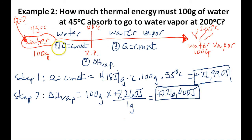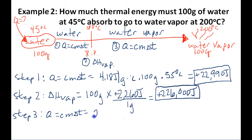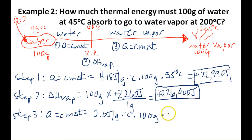In step three, we find how much thermal energy the water vapor absorbs as it goes from 100 to 200 degrees. Using Q equals CM delta T, the specific heat of water vapor is 2.0 joules per gram degree Celsius, times the mass of 100 grams, times the change in temperature of 100 degrees Celsius. That gives us 20,000 joules.